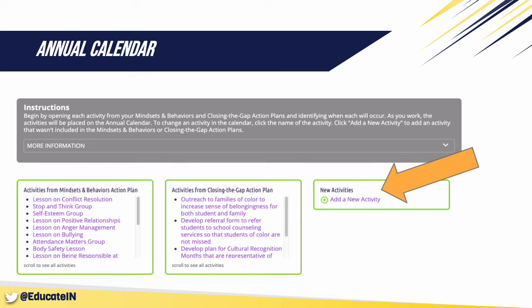Then select the date or dates the activity takes place. If it's a recurring activity or something that happens most days, such as office hours, you can select nearly every day. You will also enter whether or not this is a new activity to help achieve your Closing the Gap goal and if it's a classroom lesson or group activity. If these new activities are classroom lessons, presentations, or groups that will be part of your Closing the Gap goal and they aren't already on your action plans for next year, you will select either of these options and then will be prompted to add these new activities to your action plan.